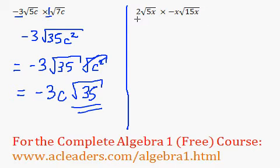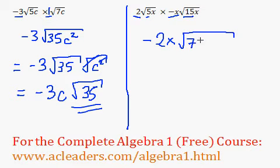What about over here? So we're going to multiply outside with outside. 2 times negative x is negative 2x. And let's multiply inside with inside. So 5 times 15 is 75 and x times x is x squared.